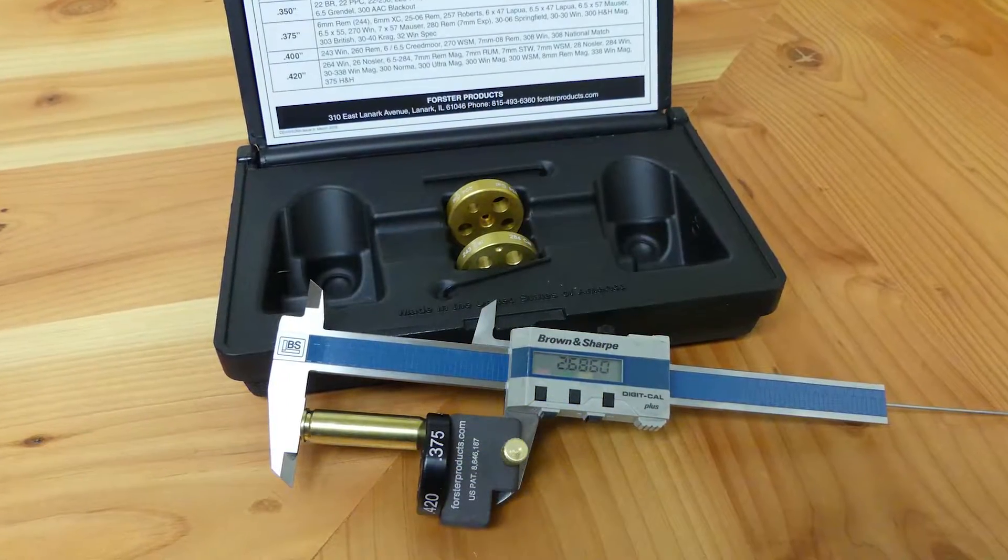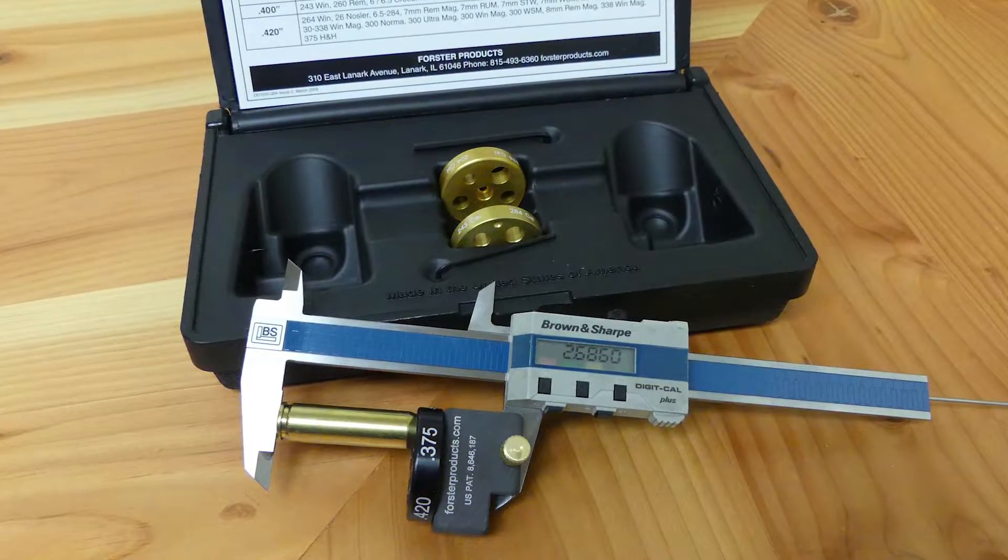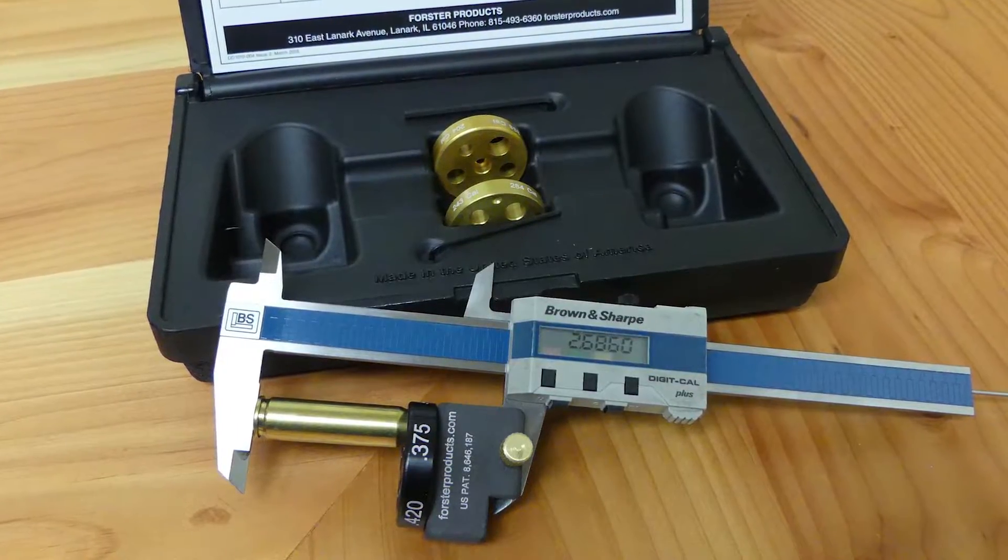First you'll want to establish a baseline of where that shoulder is being blown out to in your rifle, so that way you know how much you want to be setting that shoulder back once the die is set up in the press.